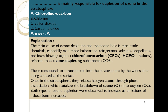These compounds are transported into the stratosphere by winds after being emitted at the surface. Once in the stratosphere, they release halogen atoms through photodissociation, which catalyze the breakdown of ozone (O3) into oxygen (O2). Both types of ozone depletion were observed to increase as emissions of halocarbons increased.